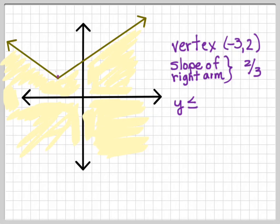And we are dealing with a solid line, so we know we're going to have an equal sign in there. And it's below, so y is getting less. So it's y is less than or equal to. So our equation is y is less than or equal to 2 thirds times the absolute value of x plus 3 plus 2. The slope goes out here in the beginning.